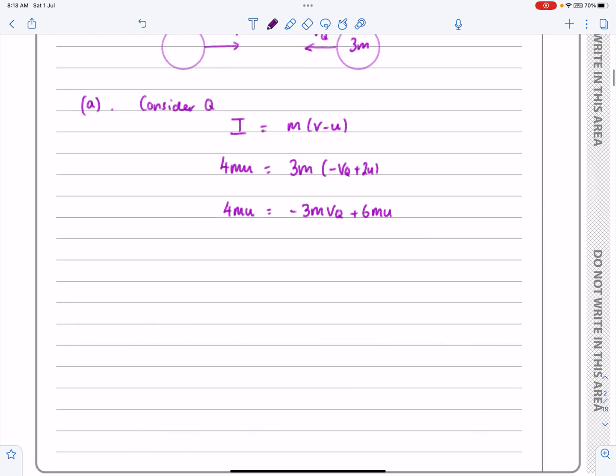So I'm going to take that over to that side and that over to that side now, just to make things simpler. We can cancel the M's at this stage as well if I want to. I'm going to get 3VQ is equal to 6U minus 4U. So VQ, 3VQ is equal to 2U,